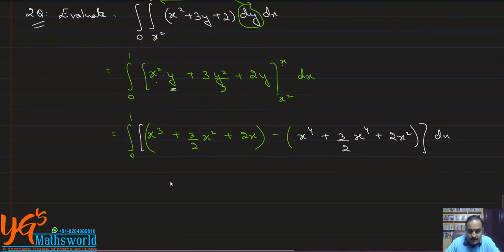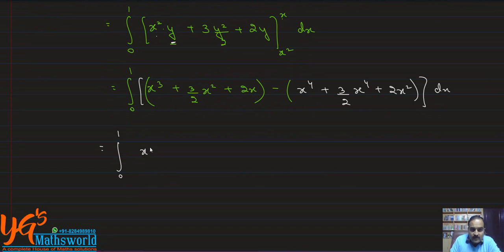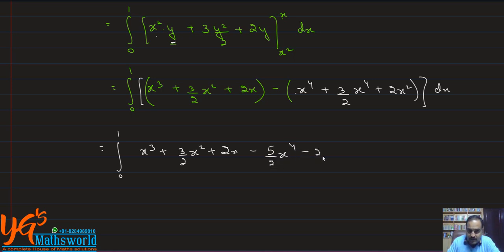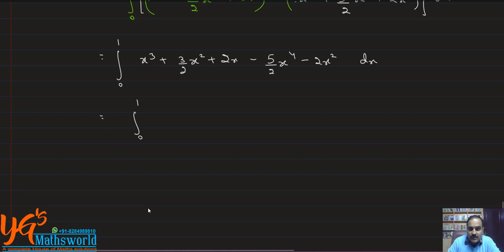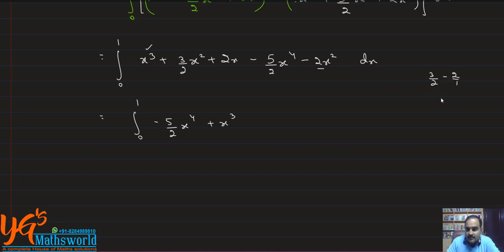Expanding all the brackets from 0 to 1: arranging from highest to lowest power, we get −(5/2)x⁴ + x³ + [(3/2) − 2]x² + 2x. Taking LCM for the x² coefficient: (3 − 4)/2 = −1/2. So the integrand becomes −(5/2)x⁴ + x³ − (1/2)x² + 2x, dx.